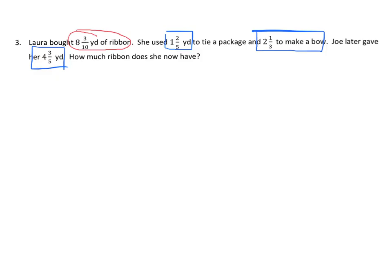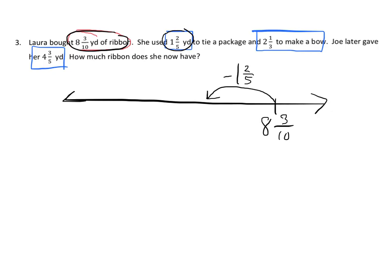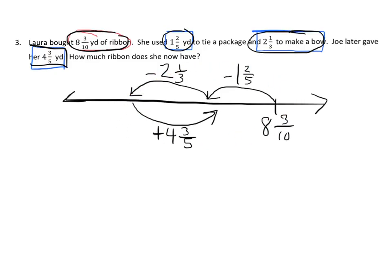Actually, I think I might draw a number line on this one. So we might start here with 8 and 3 tenths because that's what she started with. And then she used 1 and 2 fifths, so that means we're going to go backwards. And then she used 2 and 1 third, so we're going to go backwards. And then Joe gave her 4 and 3 fifths, so that means it's going to go forward. So that's going to help me efficiently write the expression which is 8 and 3 tenths subtract 1 and 2 fifths subtract 2 and 1 third and add 4 and 3 fifths. So there we go.